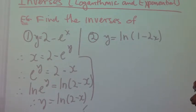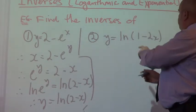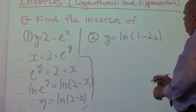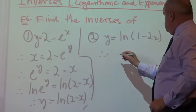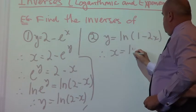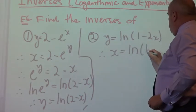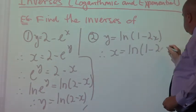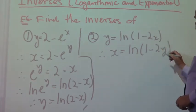We know we're going to exponentiate both sides here at some stage because I've got a logarithmic expression in there. So let's have a look at this one. We've got to swap our x's and y's. That is always the first step. So x is equal to ln 1 minus 2y.